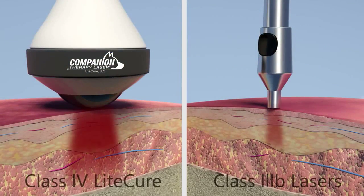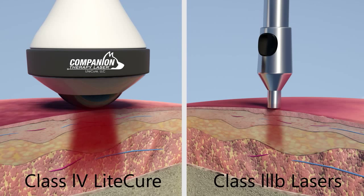As you can see in this illustration, the advent of class 4 lasers makes it possible to not only apply the benefits of photobiomodulation superficially, but to also treat a greatly expanded range of conditions by delivering a clinically effective quantity of photons to cells deep within the tissue.